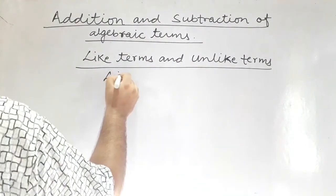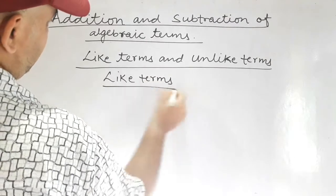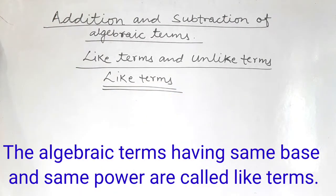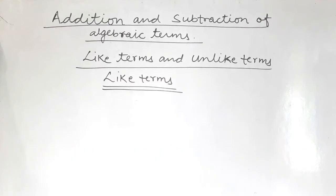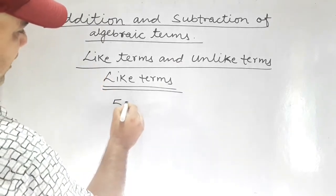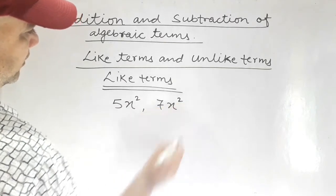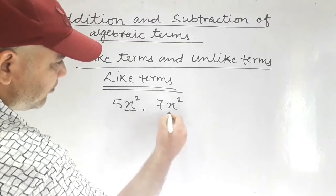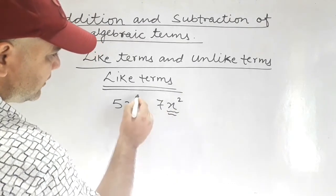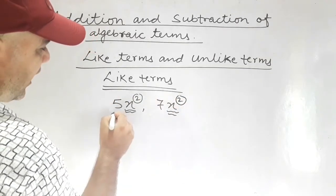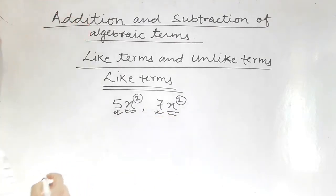Let's study what do you mean by Like Terms. The terms having same base and same power are called Like Terms. That is, Like Terms have the same base and the same power, but it is not necessary that the coefficient should be same. For example, 5x squared and 7x squared. We can see that they have the same base x and the same power 2, but the coefficients are different. If the base and powers are same, then we can say that they are like terms.